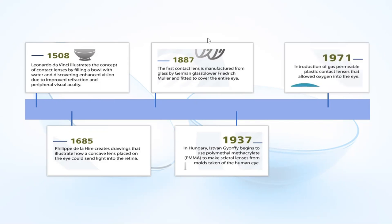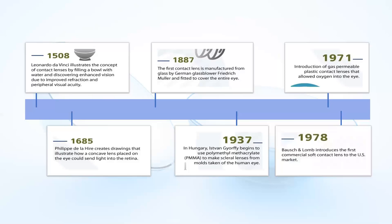That all changed in the 1970s, when gas permeable lenses were developed. Being gas permeable means they allow oxygen to travel through the lens to get to the cornea, which is obviously much healthier because the cornea can breathe again. Those lenses were followed up with soft contact lenses at the end of the 70s, which started being exported to Europe in the 1980s — and that's when the modern soft contact lens era started to appear.